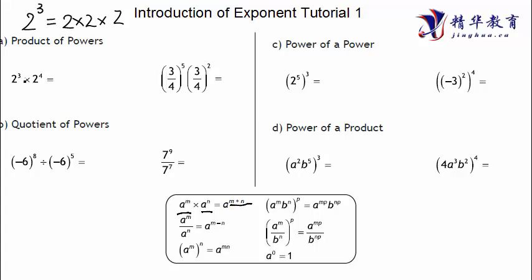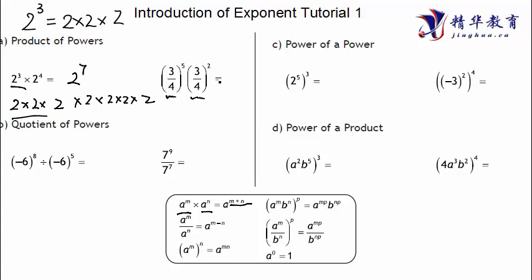For example, 2 to the power of 3 times 2 to the power of 4: the first means 2 times itself three times, and the second means 2 times itself four times. So three times plus four times equals 2 times itself seven times — that's 2 to the power of 7. That's what I mean: power times power equals power add up. One thing to be careful — you need to make sure the bases are the same. If the bases are not the same, do not apply this rule. Same thing here: 3/4 to the power of 5 plus 2, which is 7.